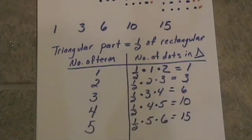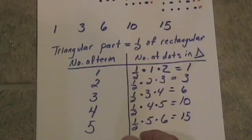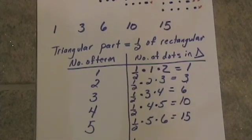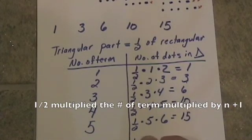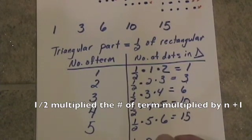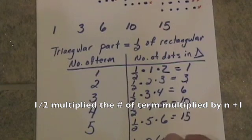So, the explicit formula for the nth term would be one-half times the number of the term times n plus one.